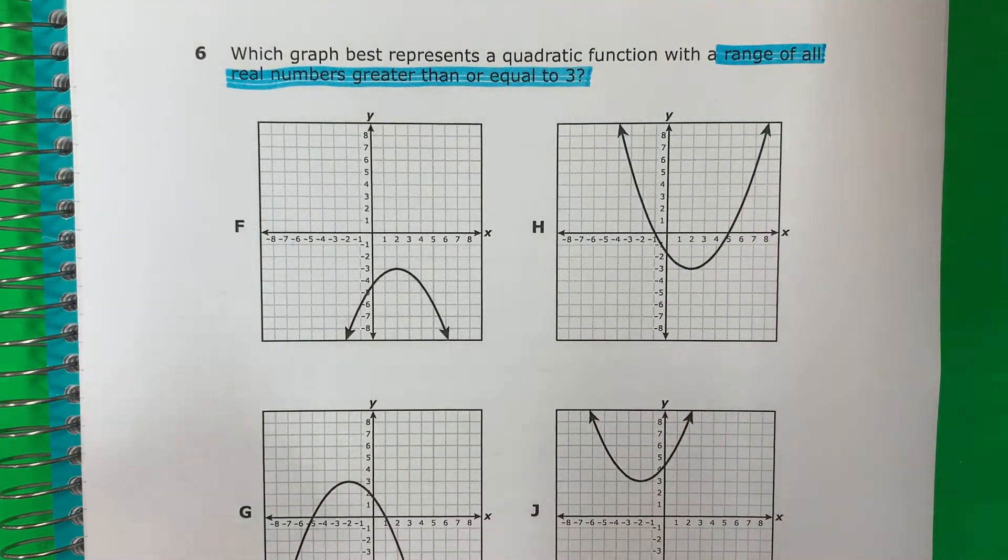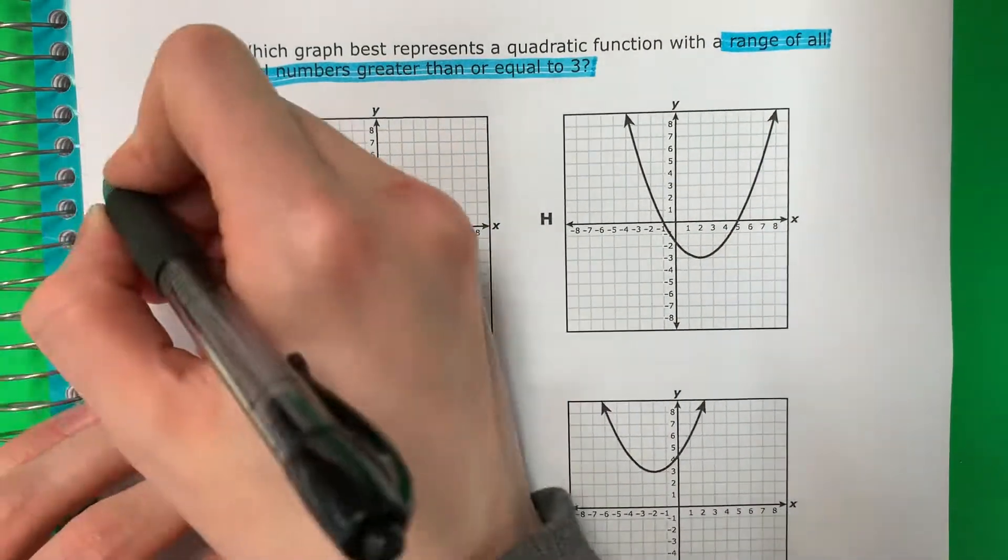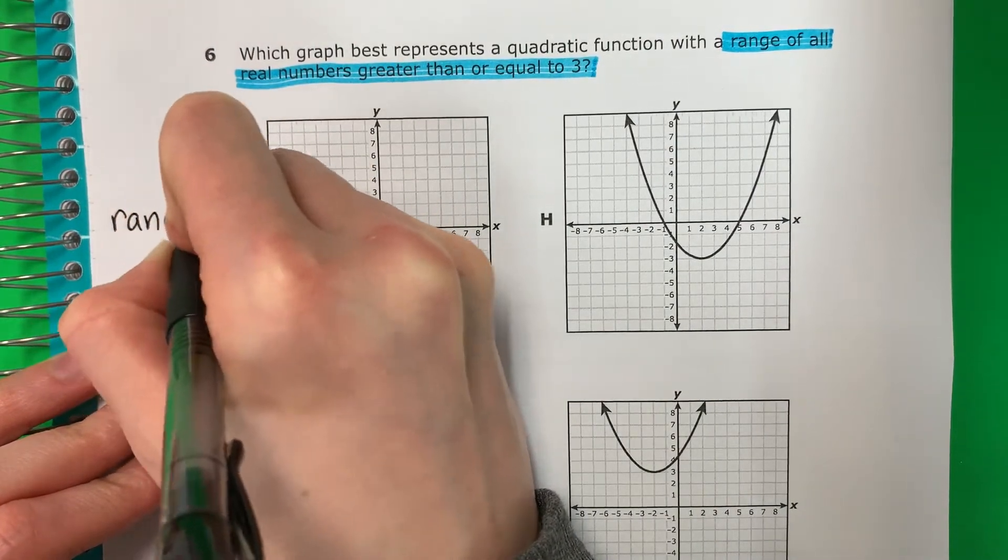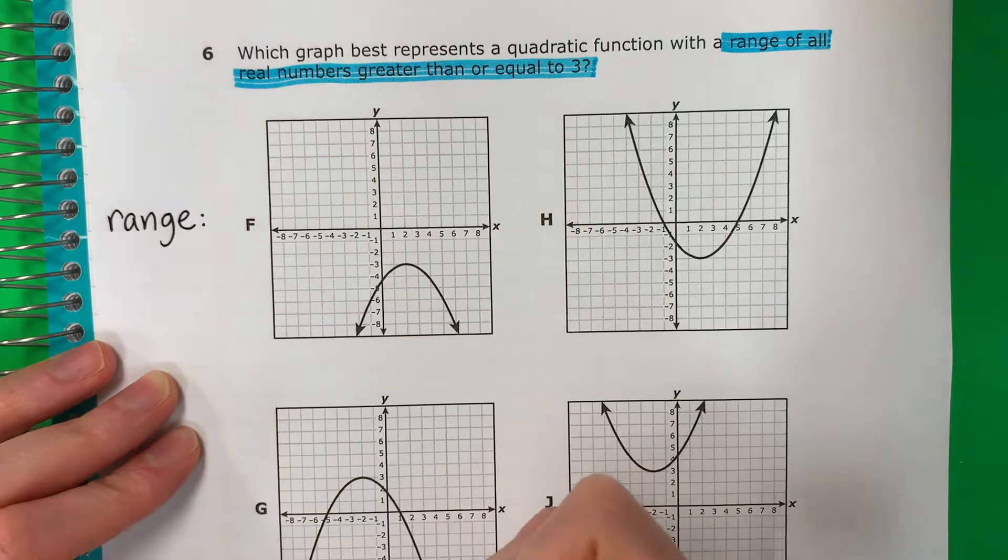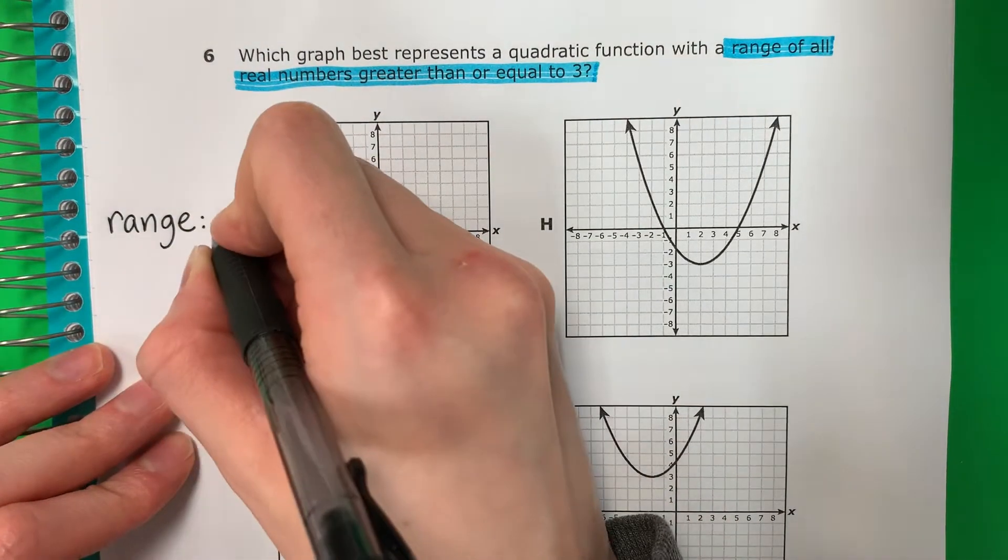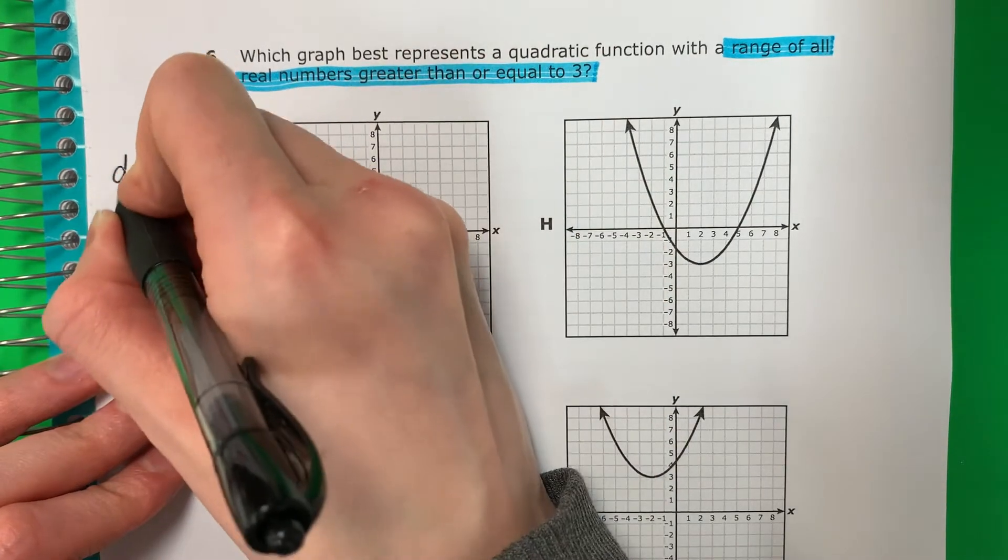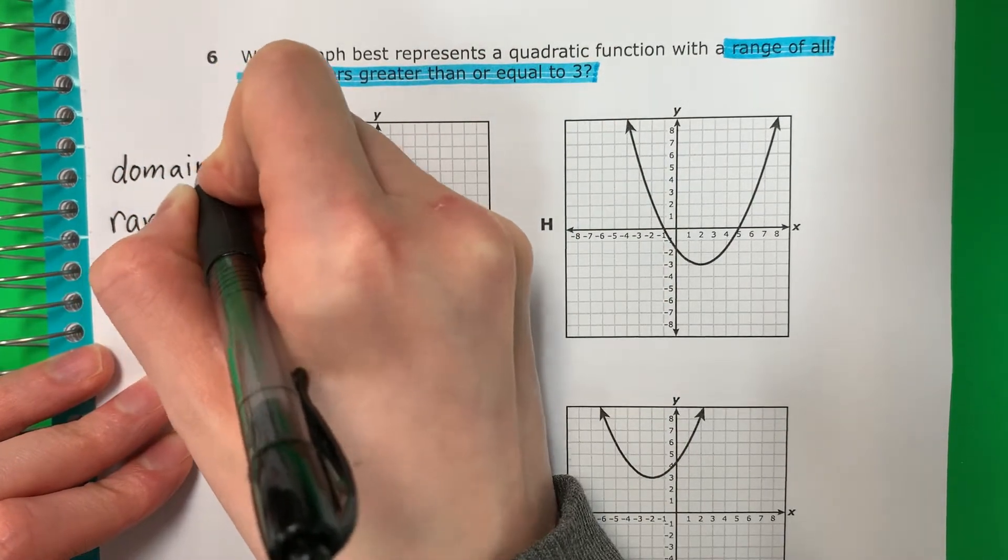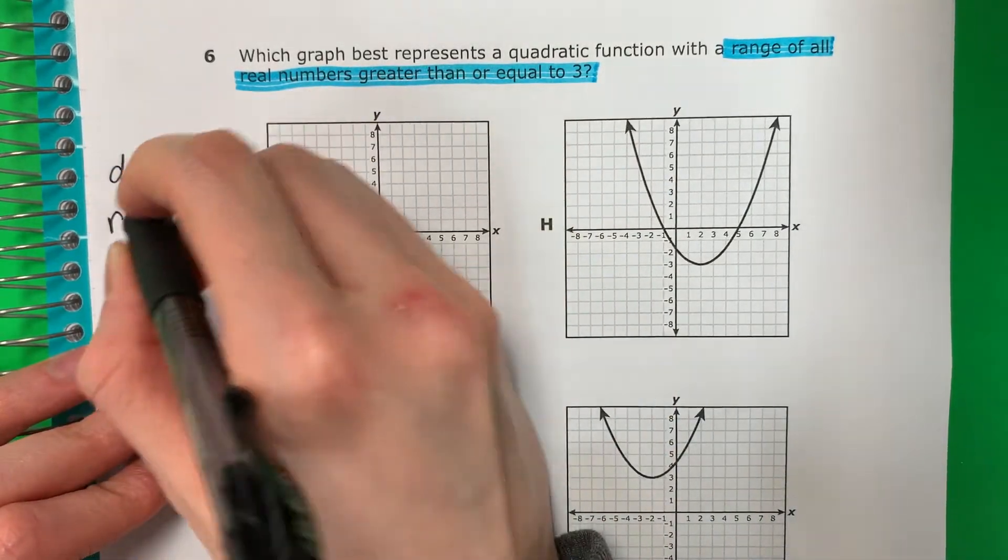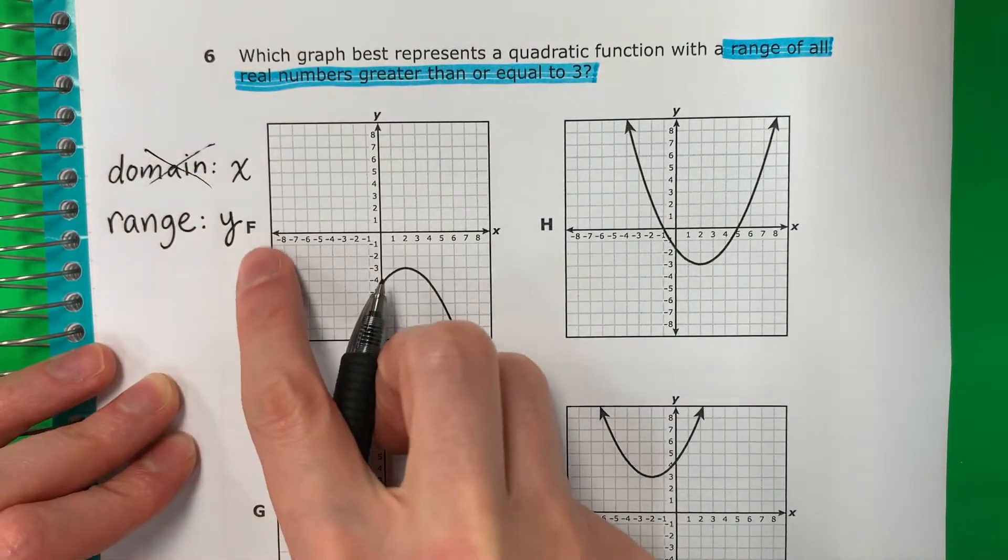Okay, so let's go ahead and write down what's important. So it's range. Okay, remember range is x or y? Range is y. Remember domain is x. Okay, but we're looking at range right now. So we're not doing domain. We're doing range, which is y.